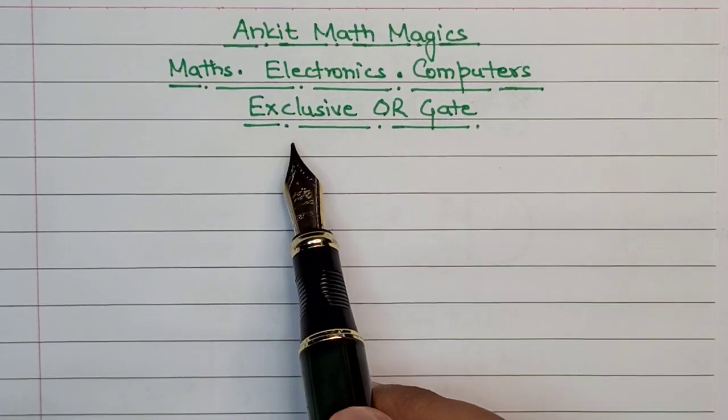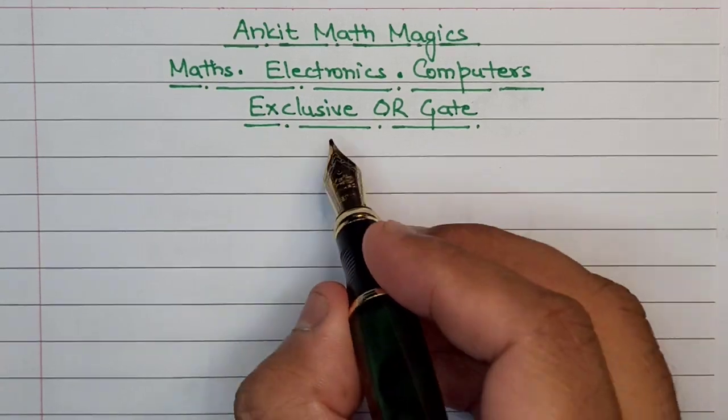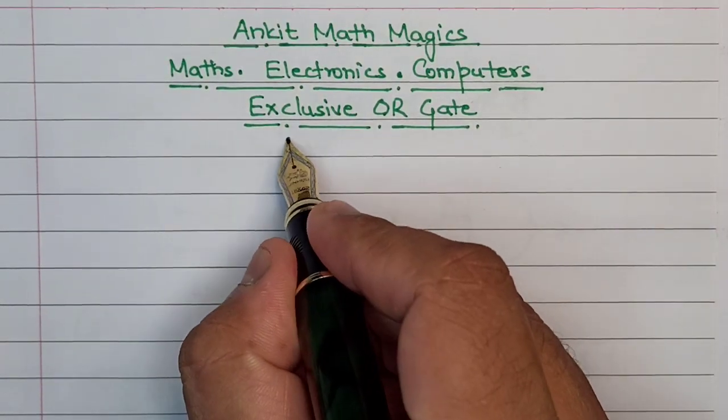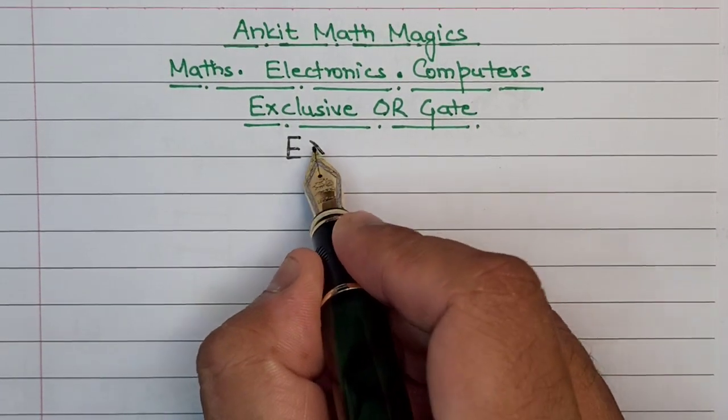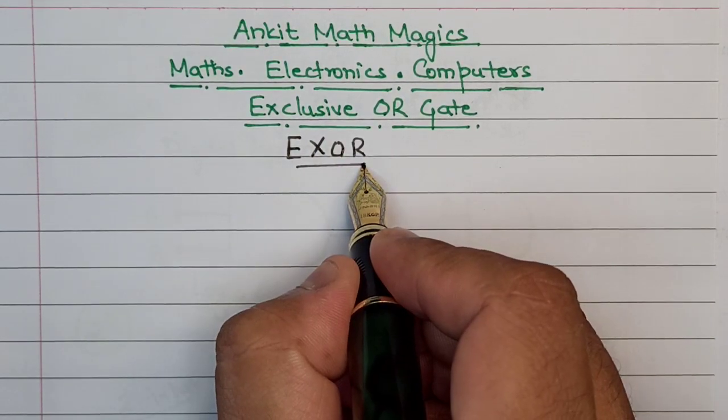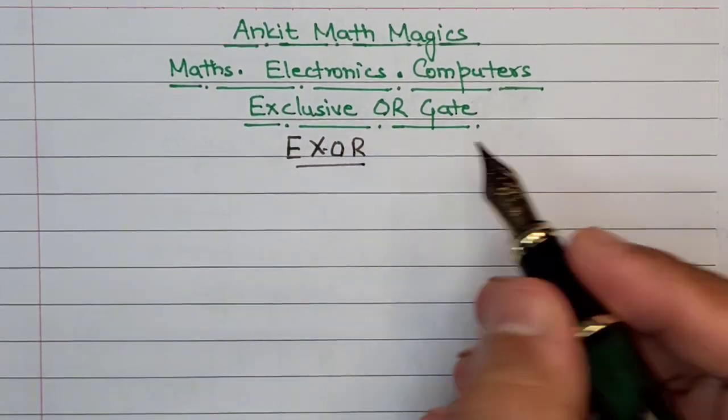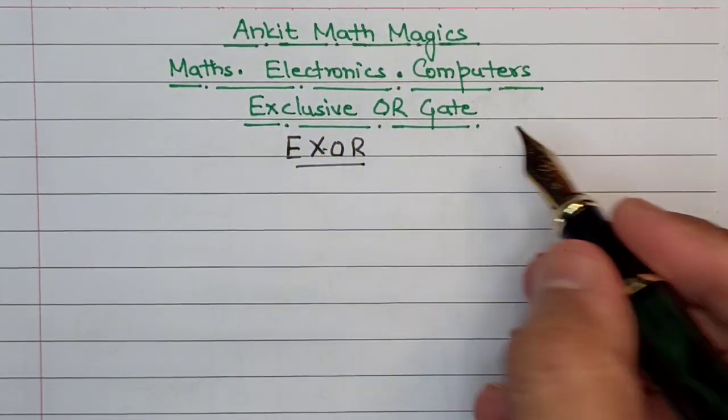In this video we'll be discussing a really interesting logic gate: the Exclusive OR gate, also known as the XOR gate. In some books it's written like this, and in some books you can have the complete name Exclusive OR like this.